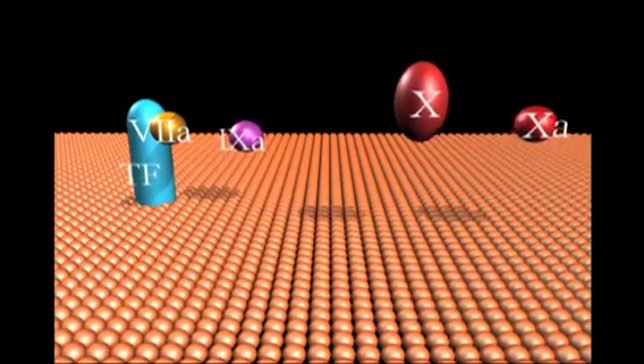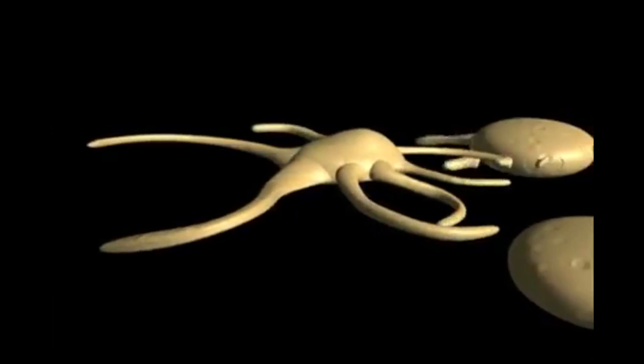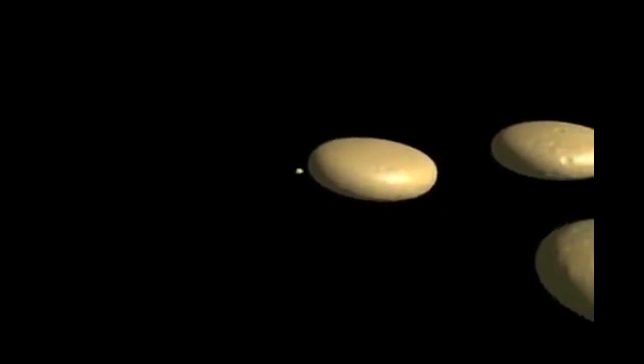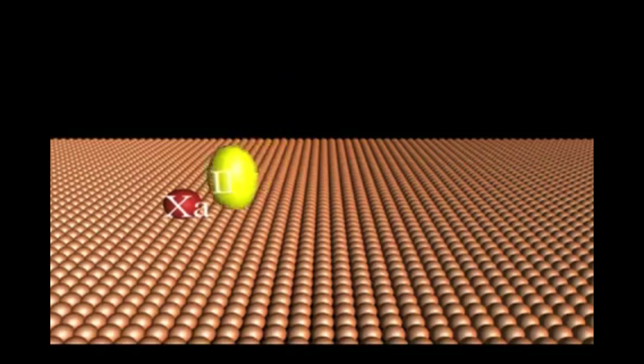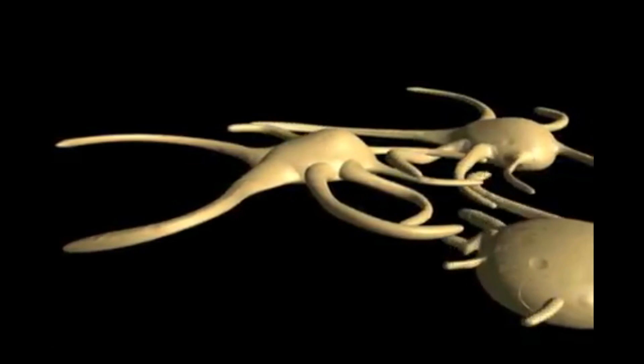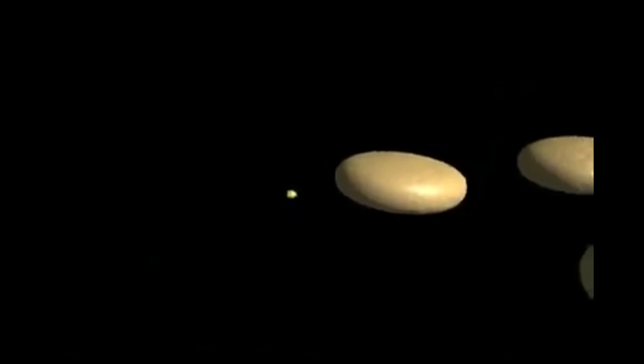The small amounts of factor 10a initially produced, which escape inhibition by antithrombin, can activate a small amount of prothrombin (2) to thrombin (2a) on the activated membrane surface. This is an inefficient reaction compared with the subsequent major thrombin production catalyzed by the prothrombinase complex (5a, 10a), which is over 10,000-fold more efficient.